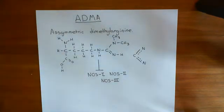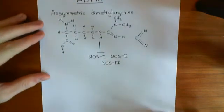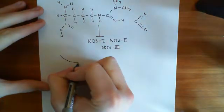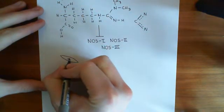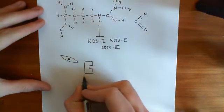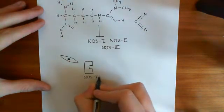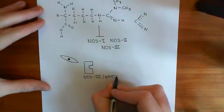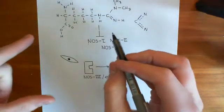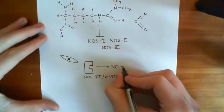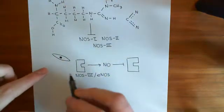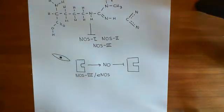Now let's look at this negative feedback loop. Endothelial cells in the cardiovascular system produce nitric oxide. If we have an endothelial cell here, it contains nitric oxide synthase enzymes — the main type being NOS3, or eNOS. This enzyme is producing nitric oxide, and nitric oxide inhibits the enzyme which breaks down ADMA, which is also found in the endothelial cells.